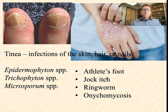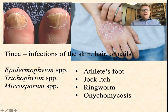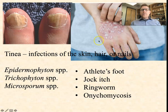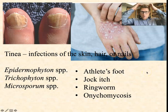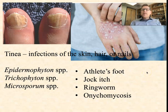Another category of mold infections is tinea — infections of skin, hair, or nails. Three common species are Epidermophyton, Trichophyton, and Microsporum. We know these more commonly as athlete's foot or jock itch, depending on location, ringworm if it's on the skin, or onychomycosis if it's nails or hair and scalp. These are all fungal infections. Remember, molds are multicellular infectious fungi, and yeasts are the single-celled fungi.